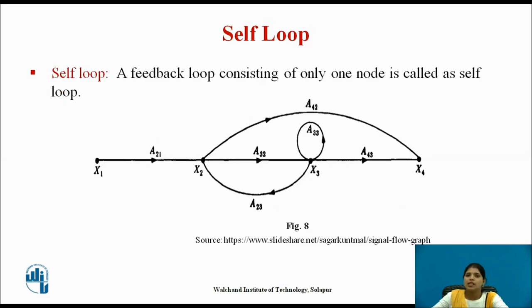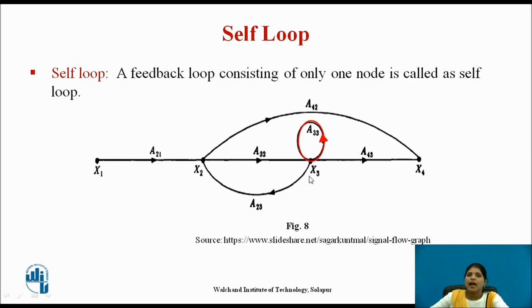The next term is self loop. A feedback loop consisting of only one node is called a self loop. For example, a33 at node x3 is a self loop.